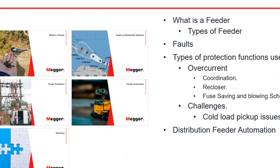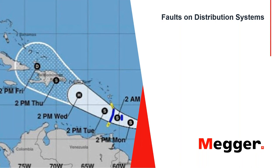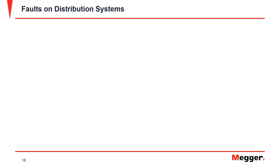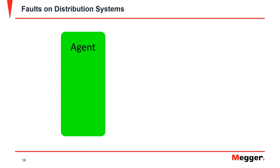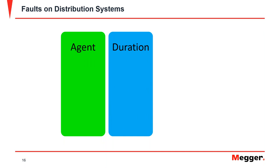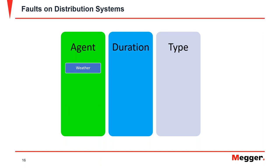The faults on distribution systems are mostly temporary in nature. We can classify them by the agent that caused the fault, the duration, and the type of fault. Common agents include weather, equipment failure — such as a transformer, cable, or generator — and contact with nature. A tree limb could touch a line and produce a short circuit, or touch two lines to constitute a fault as well.